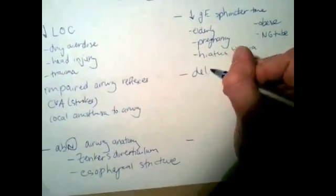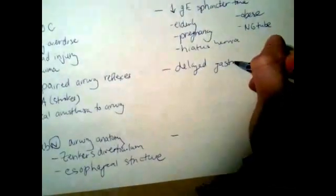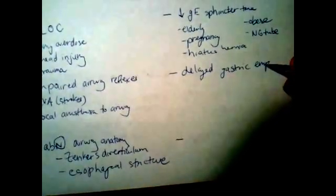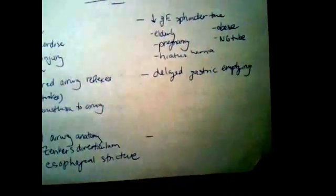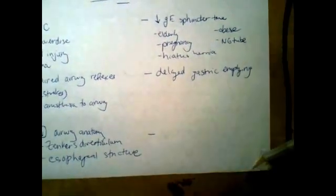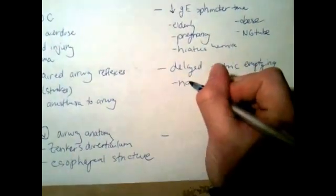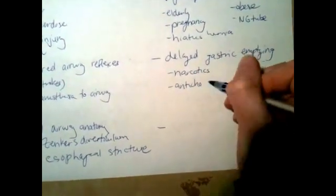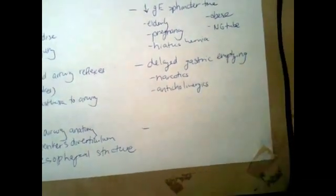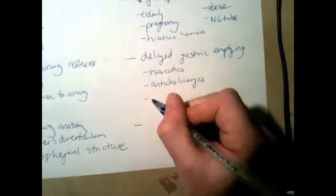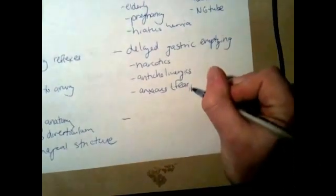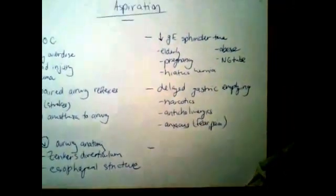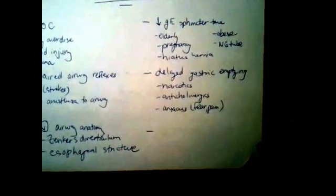The fifth category is delayed gastric emptying. Patients can be taking things like narcotics or anticholinergics — there are definitely different medications that can cause delayed gastric emptying. If a patient is really anxious, or experiencing fear or any kind of pain, that can also cause delayed gastric emptying, as it's a sympathetic or parasympathetic response.